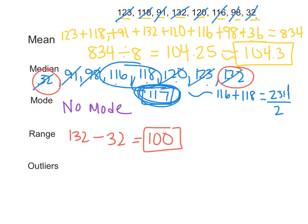And then finally, the outliers would be a number that's way bigger or smaller than the rest. If you look at this, 91 minus 32 is a difference of 59, whereas 32 and 91 are only about 9 away from each other up here. So you could say that 32 is quite a bit smaller than the others, so that could probably be considered an outlier. So those are some examples of how to calculate mean, median, mode, range, and outliers.